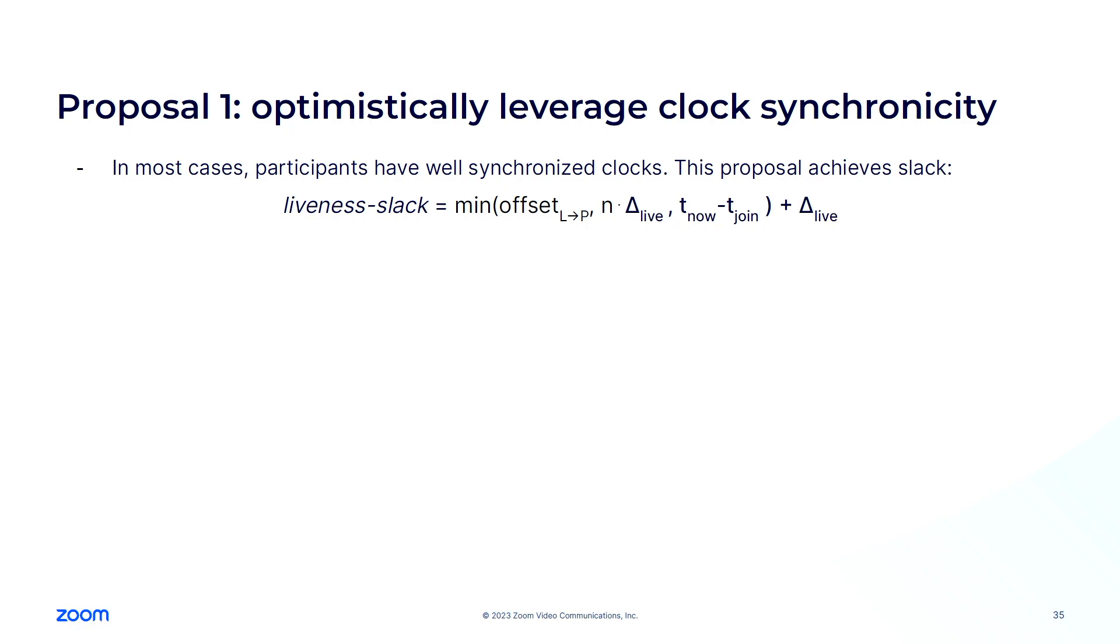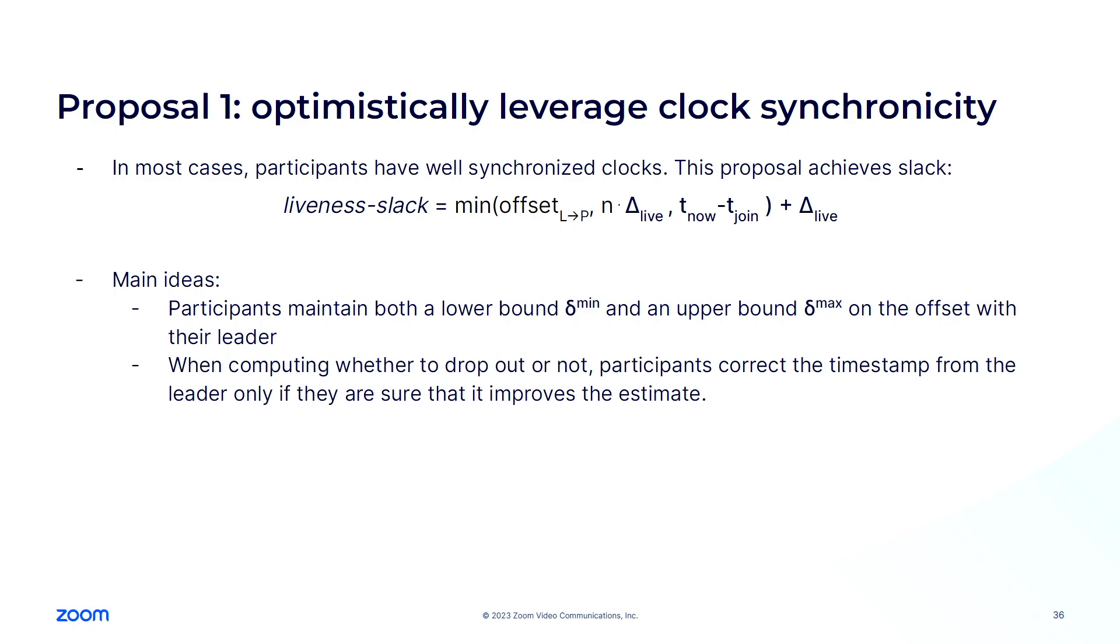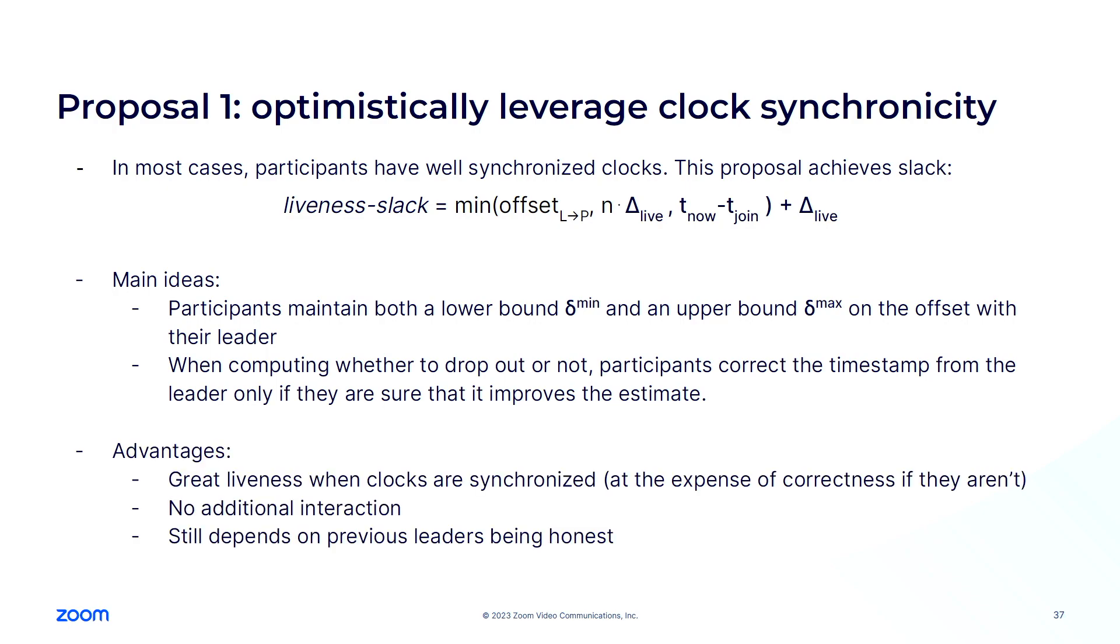And we can see how for each new leader this game can be played where the adversary can delay further by an additional delta live term. And however, in this case, everybody is synchronized. So in addition, I don't have much time to go into this so I'm going to skip it but this problem is compounded when one of the previous leaders is malicious because essentially they can pre-generate a bunch of heartbeats so that this problem can be accentuated. We have two proposals that improve on these points. The first one essentially starts with the observation that if you have well-synchronized clocks it doesn't make... You can get better liveness properties when the clocks are actually well-synchronized at the cost of worse correctness when they aren't. So you can have a protocol where if the parties are well-synchronized you get good liveness and if they are not people will drop out from the protocol a little bit too much.